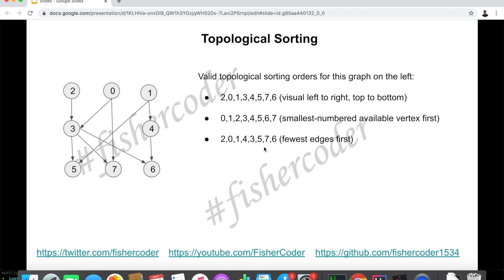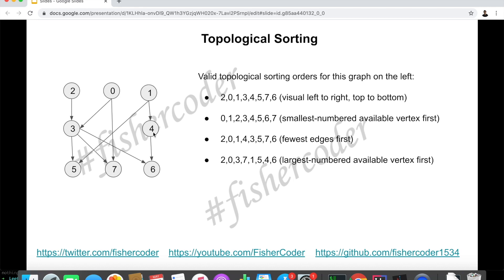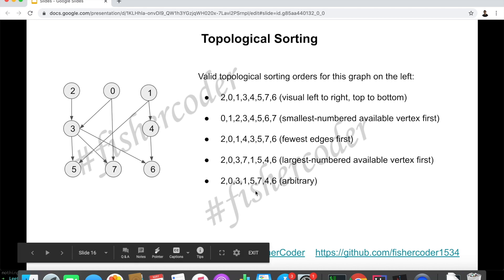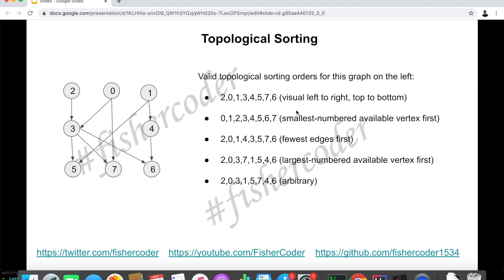We still have more valid topological orderings. We can go from largest numbered available vertex first. Which one has the largest number? Two. So: two, then zero. After taking two and zero, three's prerequisites have been taken, so we can take three. Then we can take seven, because seven's prerequisites are three and zero, both taken. Then we take one because five requires one as a prerequisite. After one, we take five, then four, and finally six. This is just an example to show there are multiple valid topological orderings for a valid DAG.